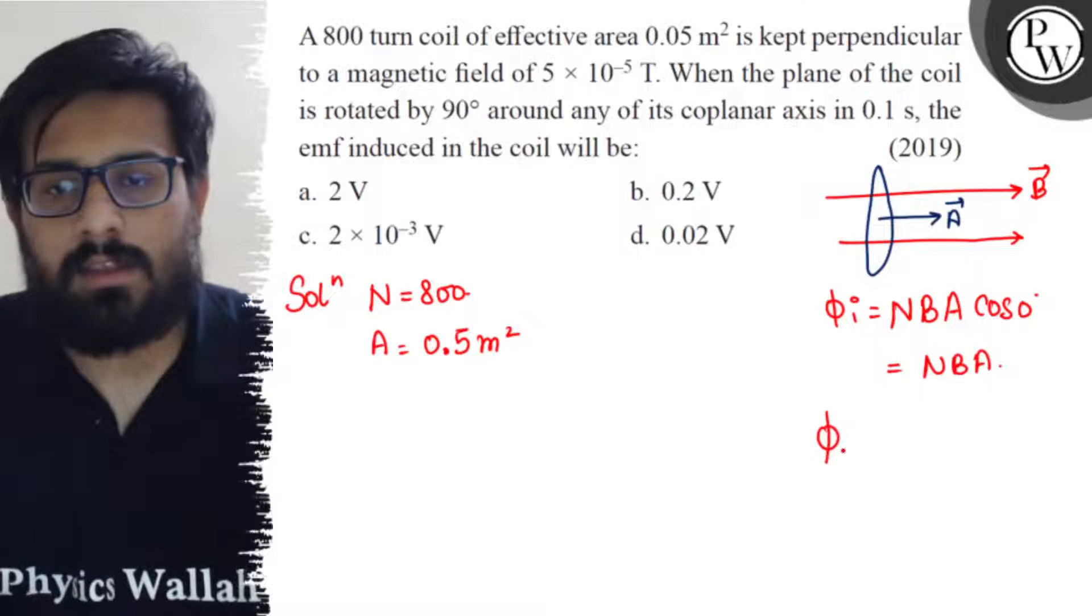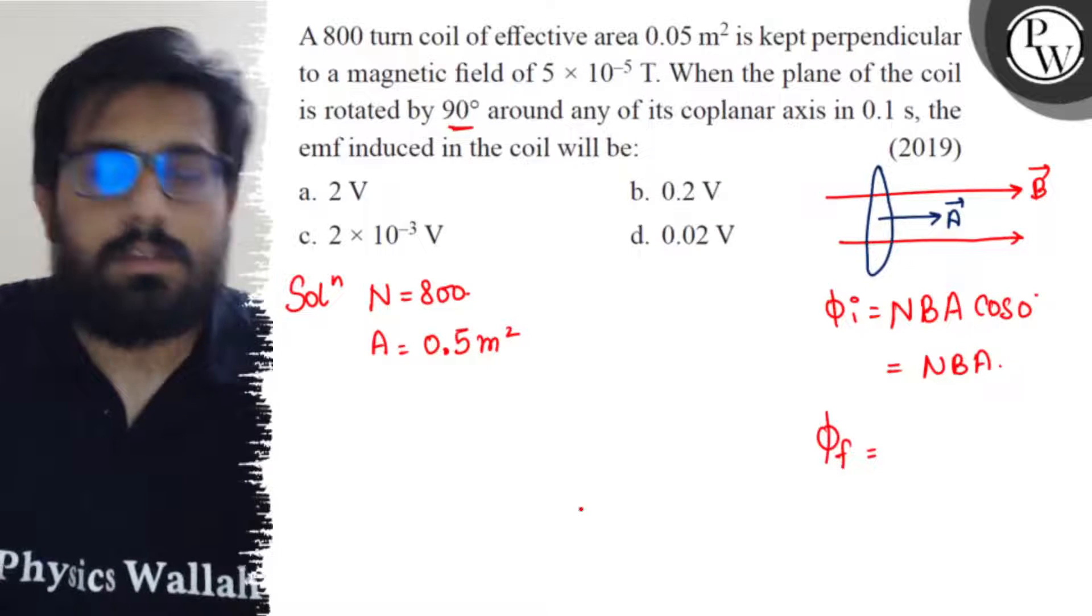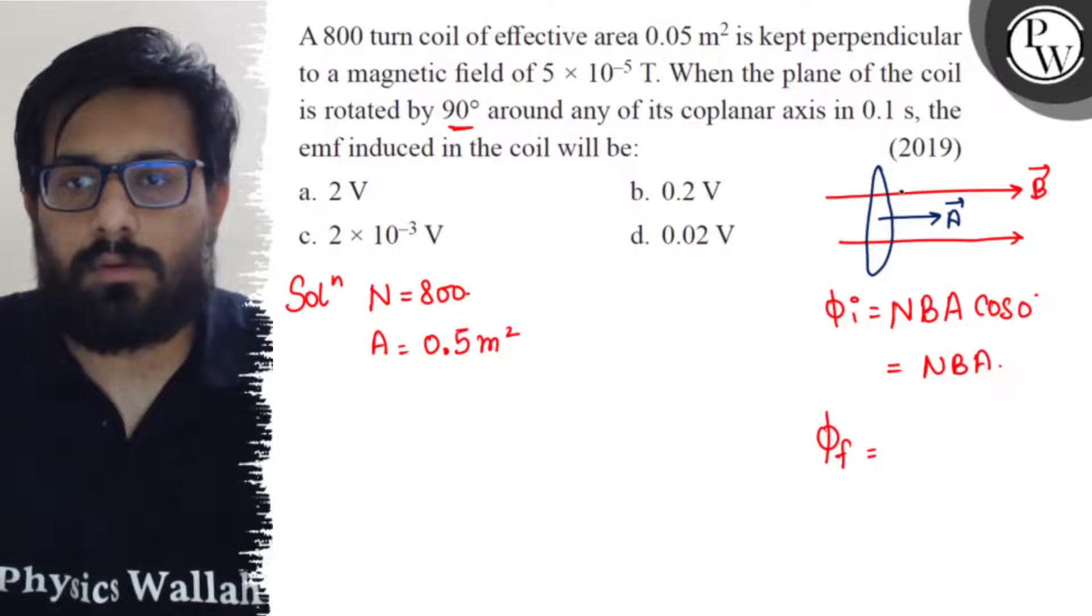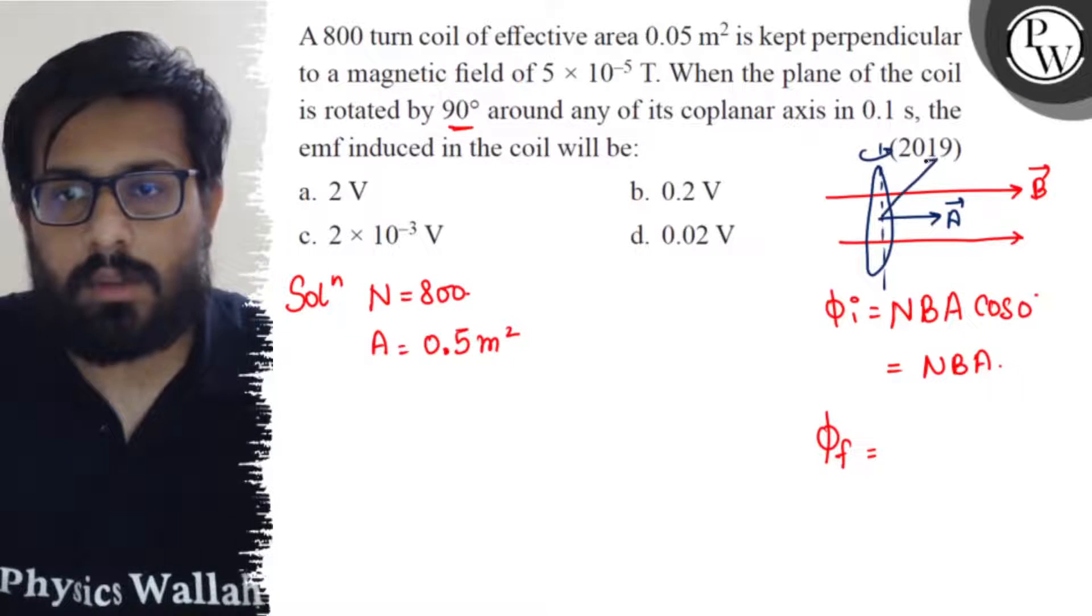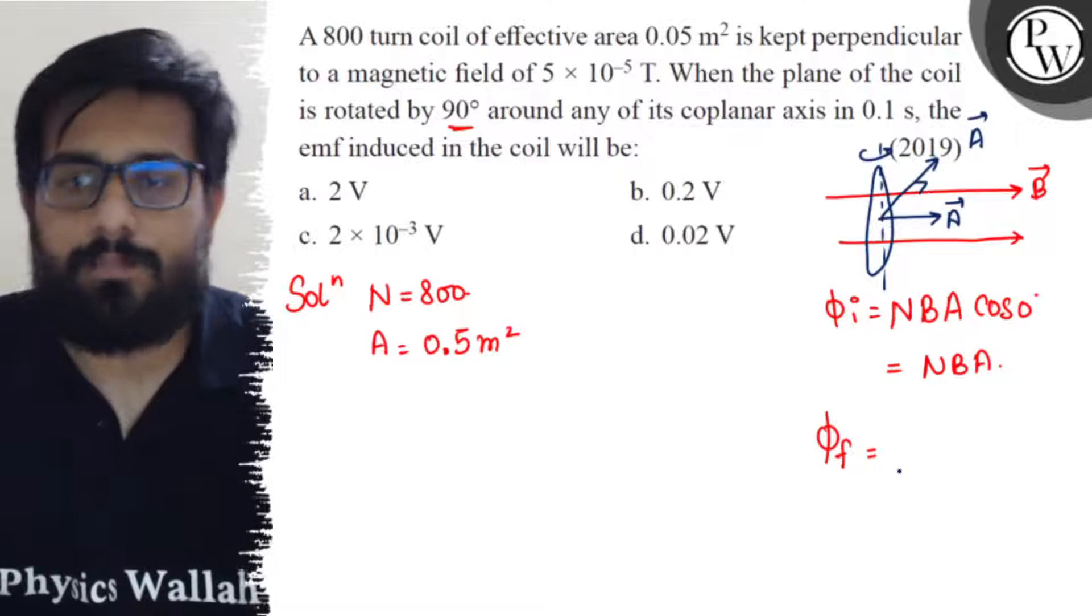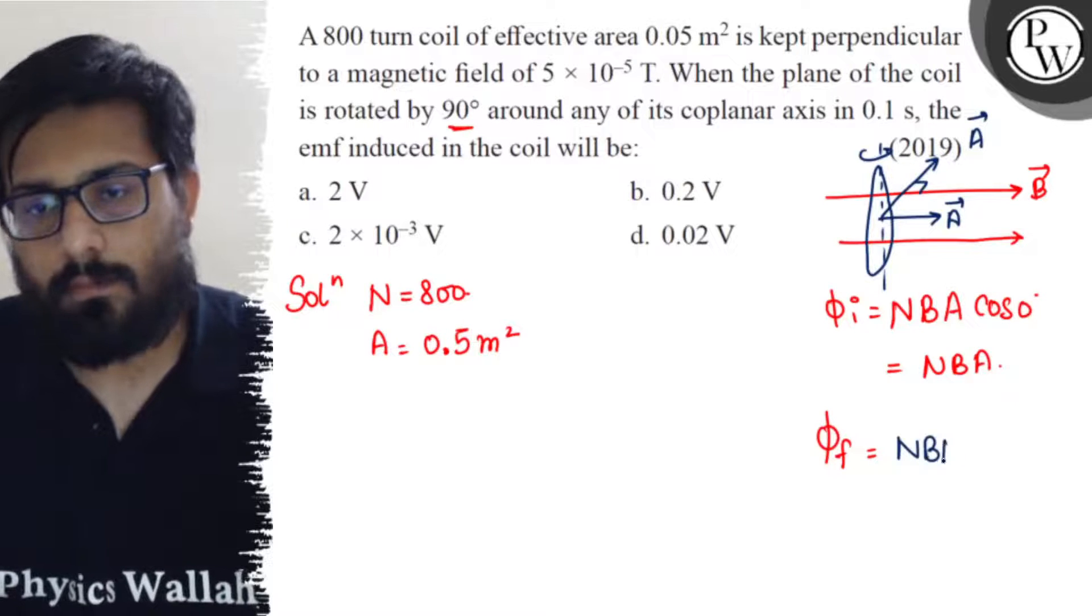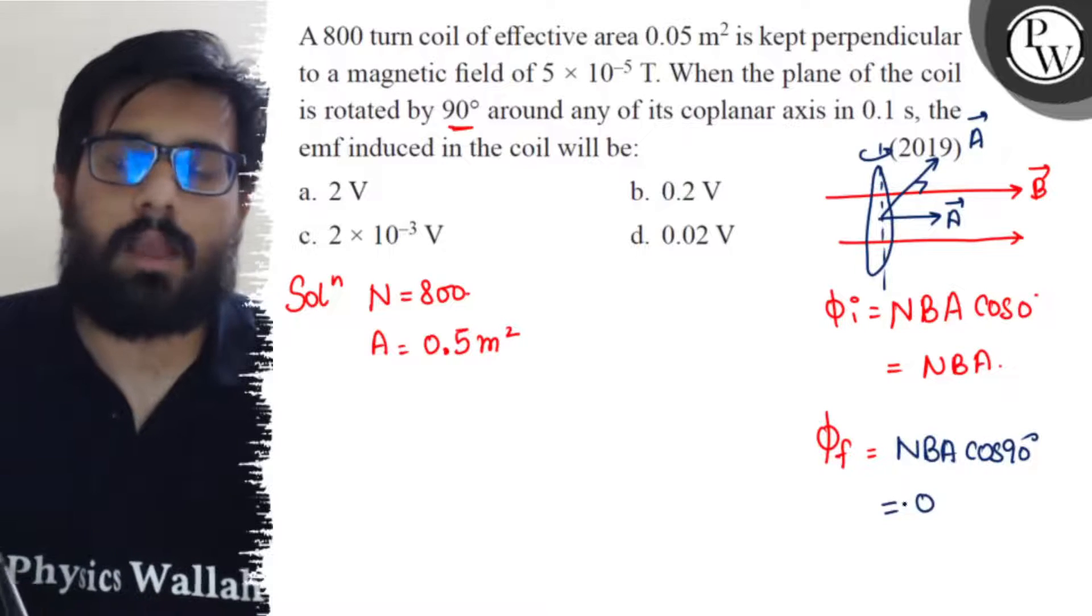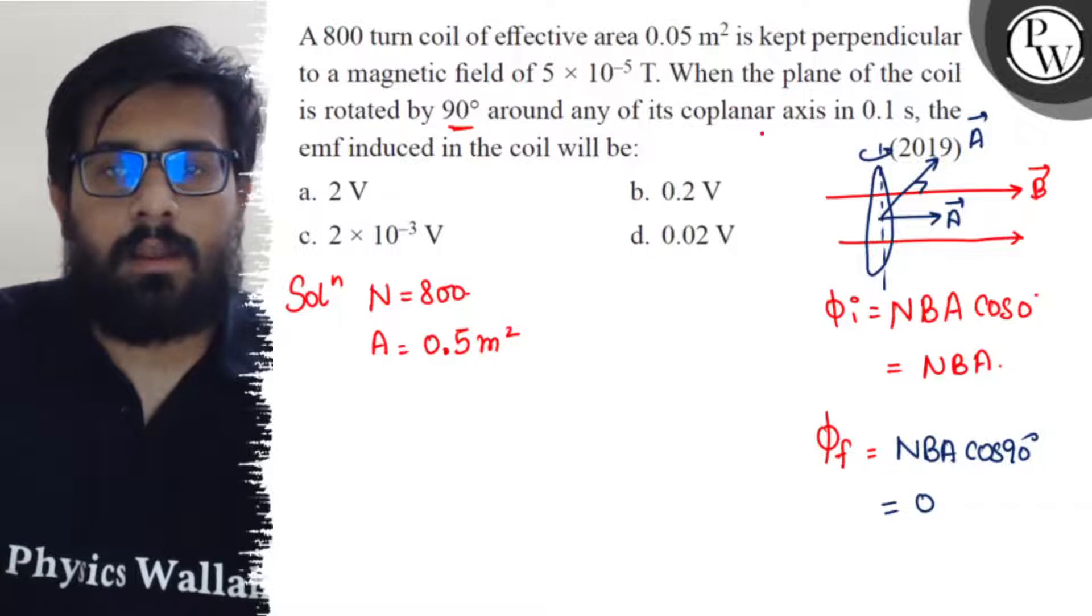What about the final flux? If you rotate 90 degrees, when you rotate the coil, the area vector comes out to be like this and it makes an angle of 90 degrees with the magnetic field. So the final flux will be NBA cos 90°. Now we know that the value of cos 90 is 0, so the final flux will be zero.